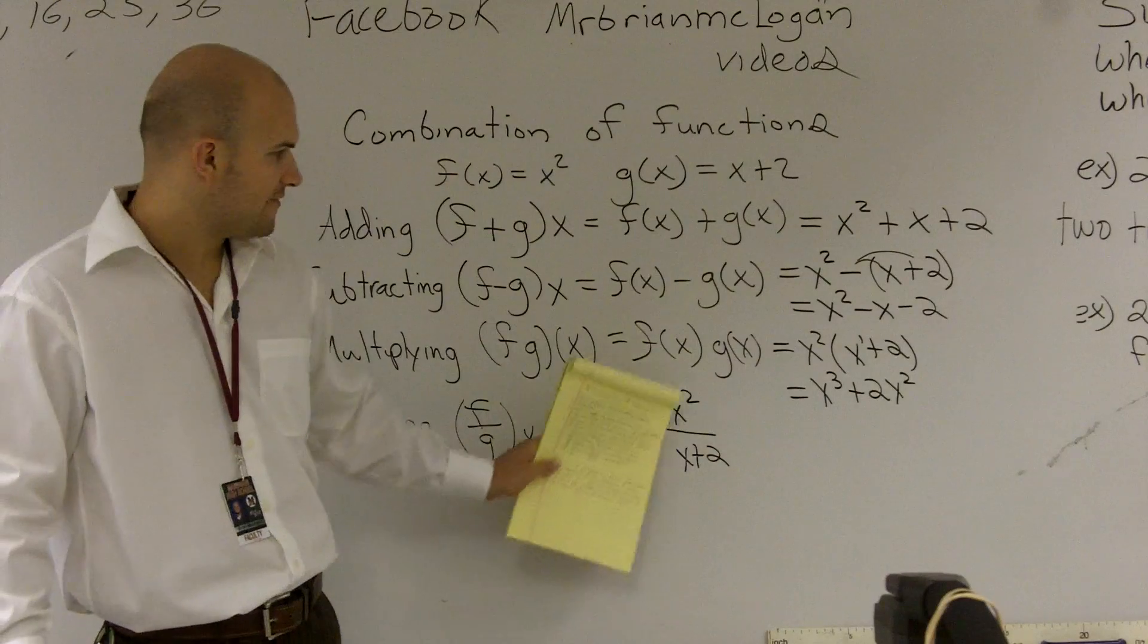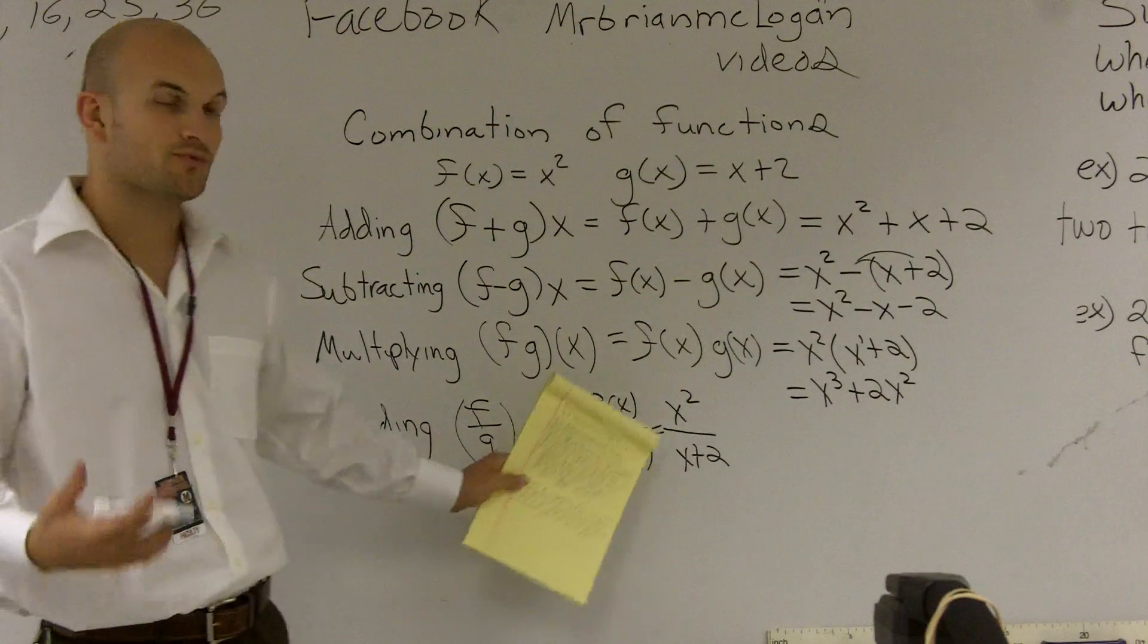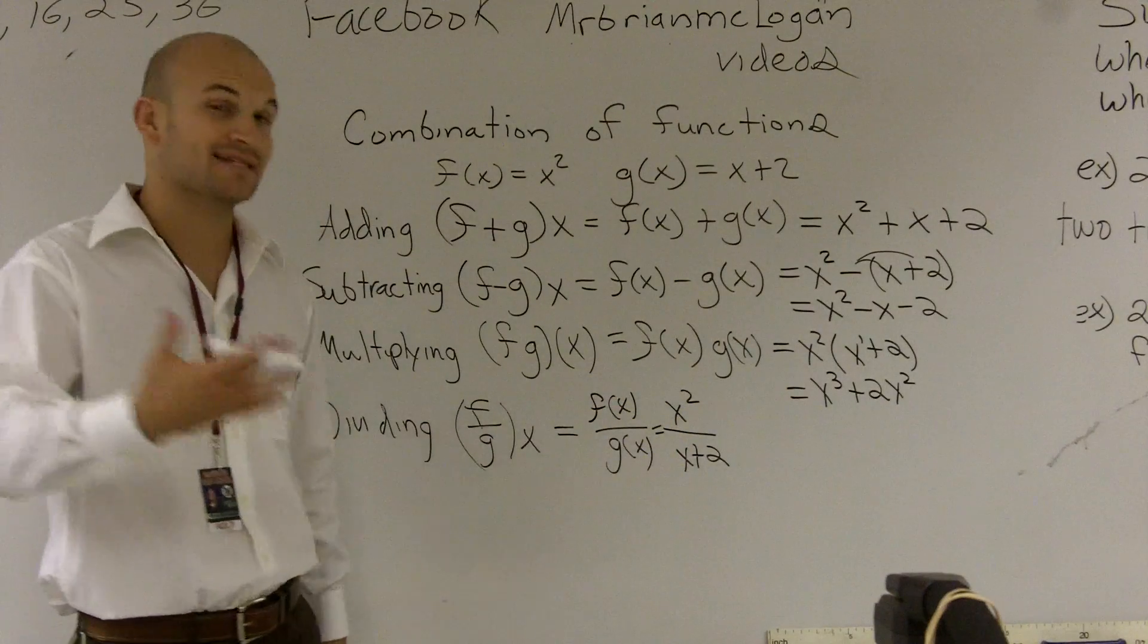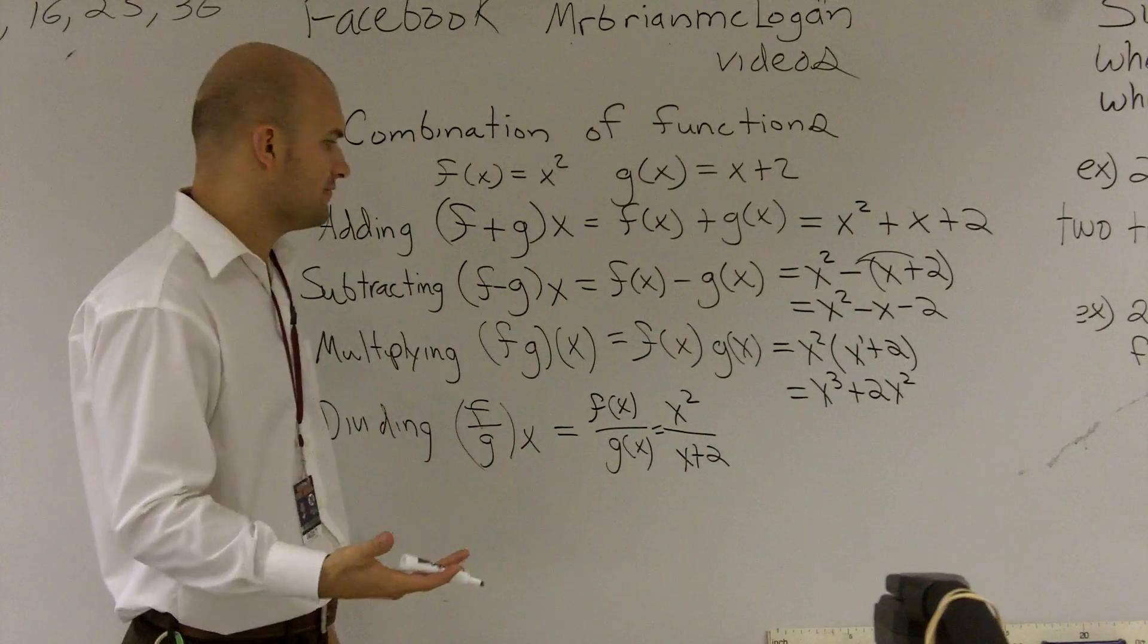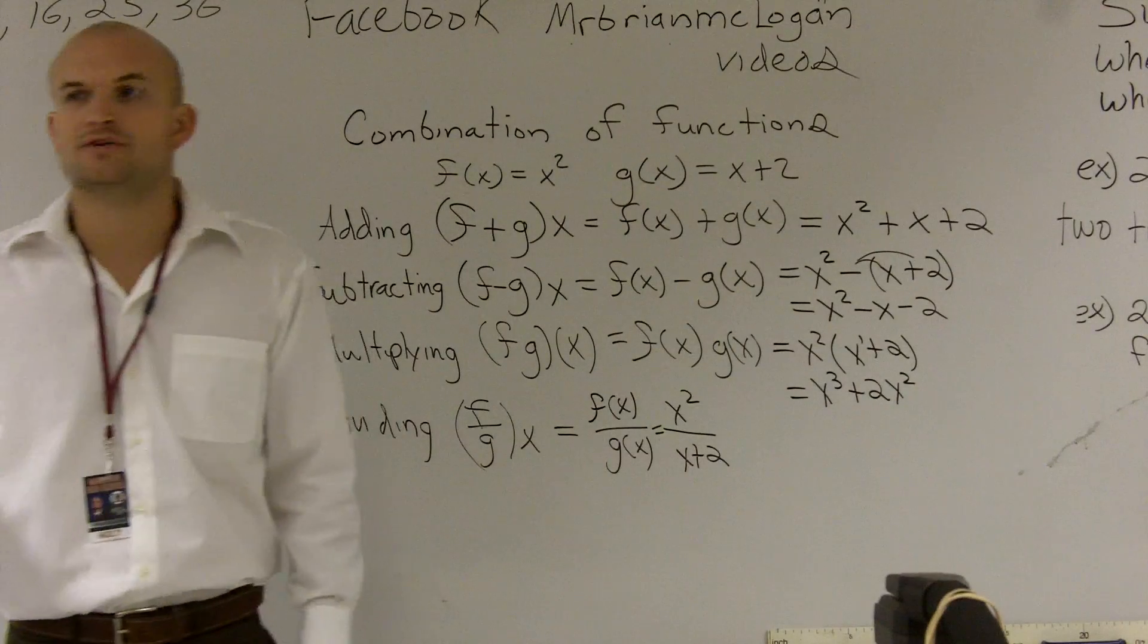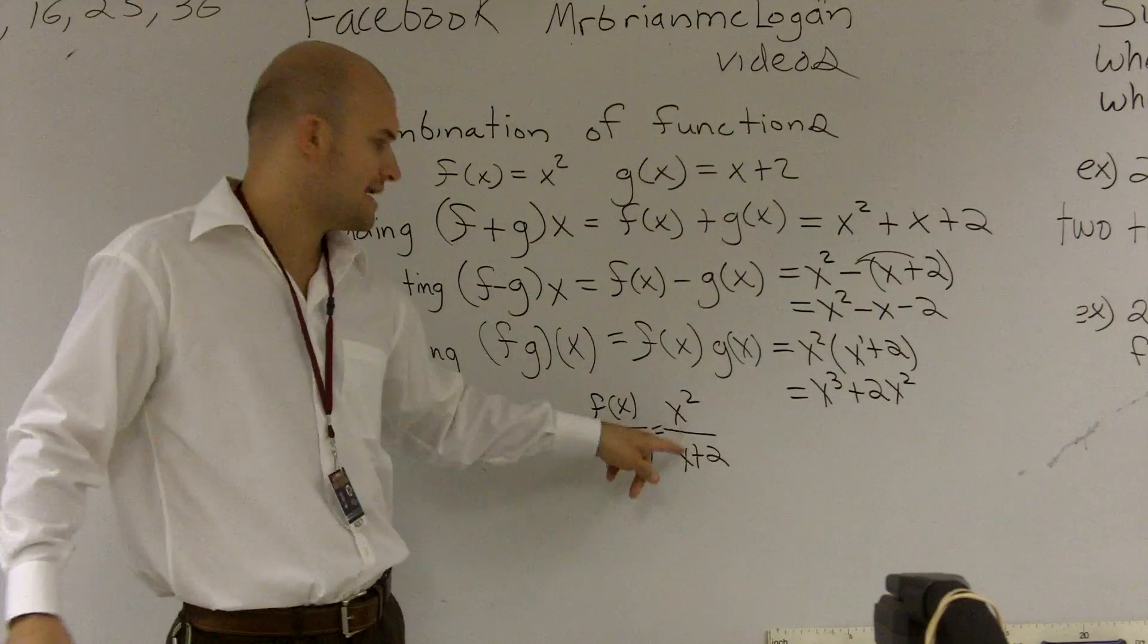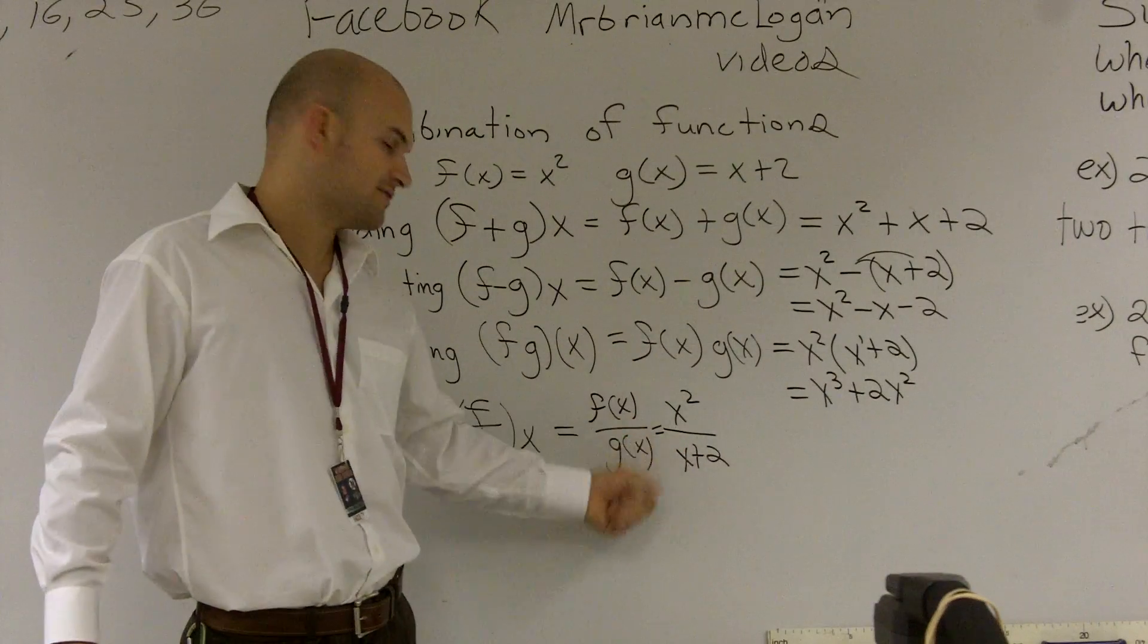So here, we can't reduce this anymore. However, we can determine what the domain is, or at least what values we cannot have, what values x cannot be. Because remember, when you're looking for the domain, you're always looking for what are the values that your function is defined for. Well, we know that this function will not be defined for a negative 2 when x equals negative 2.